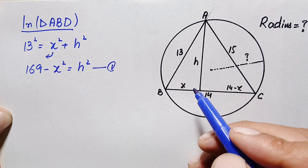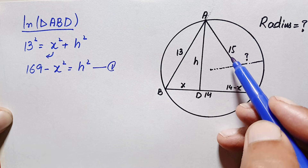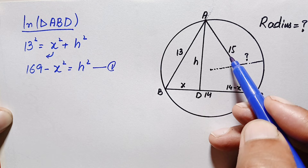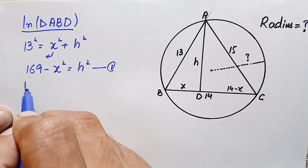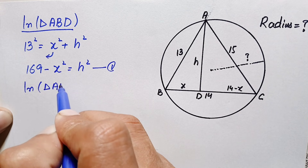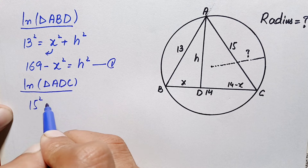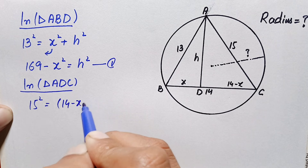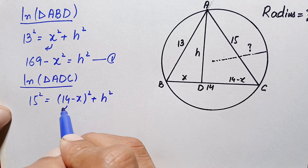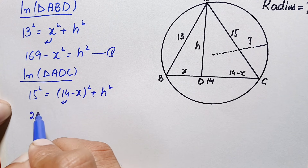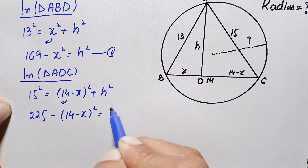Now we will apply the Pythagorean theorem in the second right angle triangle, triangle ADC. The square of the hypotenuse equals base squared plus perpendicular squared. Hypotenuse is 15, base is 14 minus x, and perpendicular is h. So this becomes: 15² = (14 − x)² + h², which gives us 225 minus (14 minus x)² equals h². Let us call this equation number two.